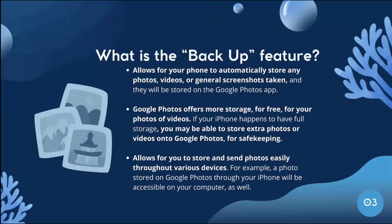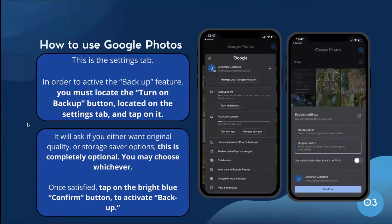If your iPhone happens to have full storage, you may be able to store extra photos or videos onto Google Photos for safekeeping. This also allows you to store and send photos easily across various devices — for example, a photo stored on Google Photos via your iPhone will also be accessible on your computer. To activate the Backup feature, locate and tap the Turn On Backup button in the settings tab. It will ask whether you want original quality or storage saver options — choose whichever you prefer — then tap the bright blue Confirm button to activate backup.